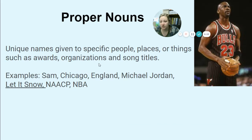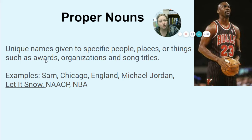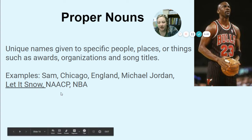Proper nouns — we talked about these. Go make sure all of your proper nouns are capitalized. Proper nouns are unique names given to specific people, places, or things, such as awards, organizations, and song titles. Michael Jordan — that's his name, that is a proper noun, capitalize it. Brooklyn, New York — capitalize it. Pataskala, Ohio — capitalize it. The NAACP, NBA — capitalize those organizations. Pause the video if you need to and go do that in your order and sequence essay.